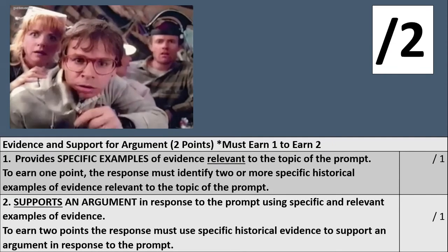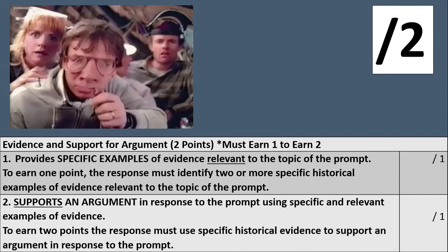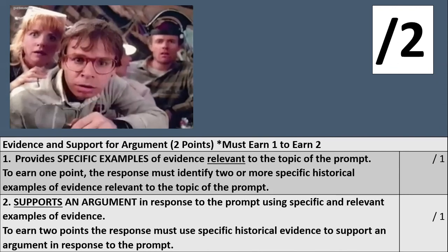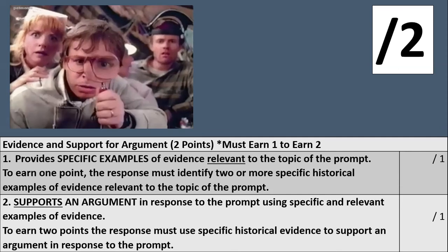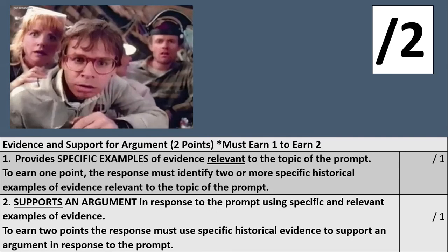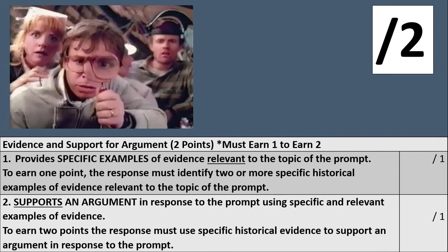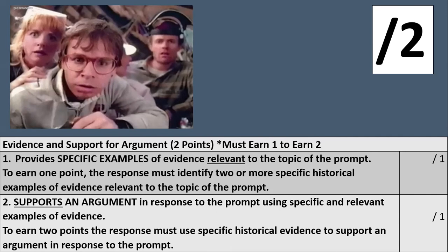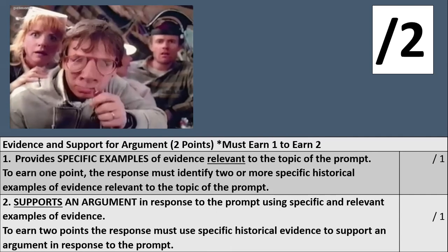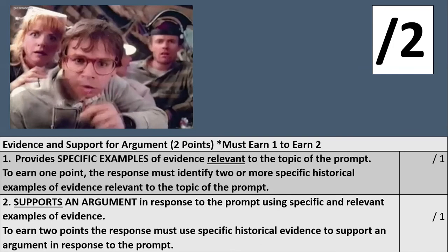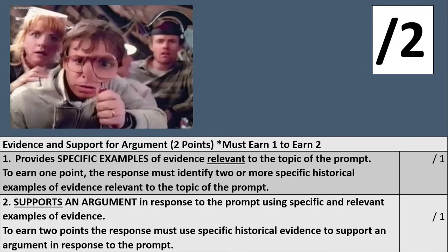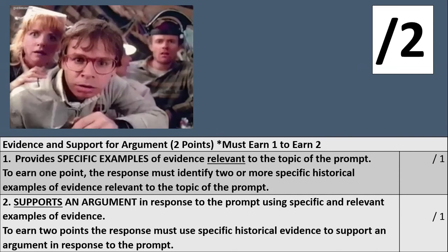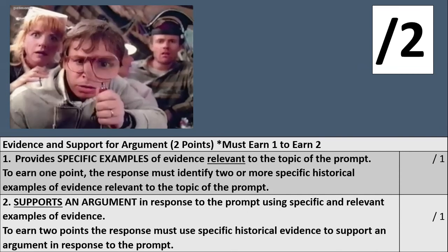You get two points for evidence, and this is where it's so important to back up your claims. You earn one point if you provide specific examples of evidence relevant to the topic of the prompt — the response must identify two or more specific historical examples. The trouble is you must earn point one to earn point two. For point two, the evidence you use must support an argument in response to the prompt using specific and relevant examples, and the response must use specific historical evidence to support that argument.